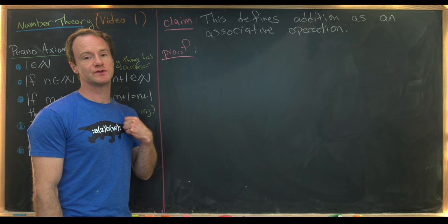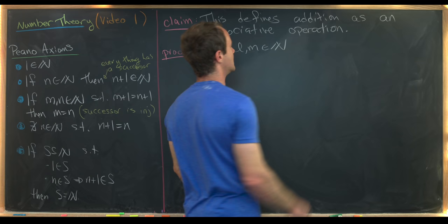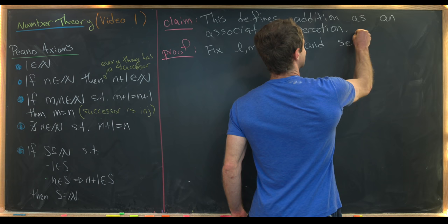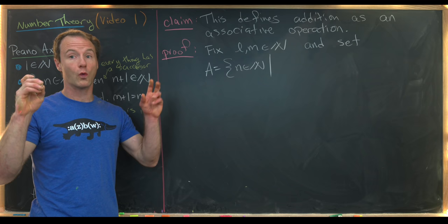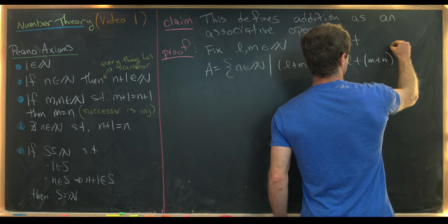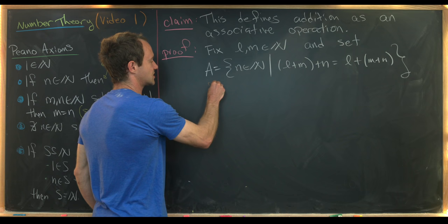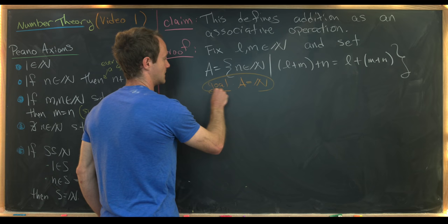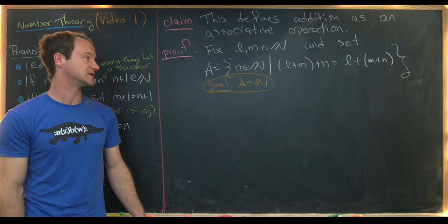We'll start by proving that the recursive definition via the successor function defines addition as an associative operation. The proof will be by induction. Fix two natural numbers L and M, and set A equal to the set of all natural numbers N such that L plus (M plus N) equals (L plus M) plus N. Our goal is to prove by induction that A equals all the natural numbers, which would tell us that associativity always holds for these fixed L and M. Since these are fixed arbitrarily, that means associativity always holds.